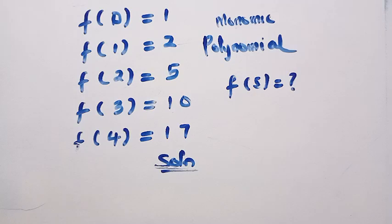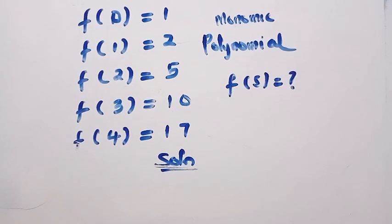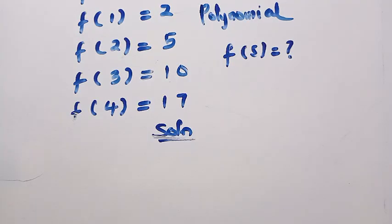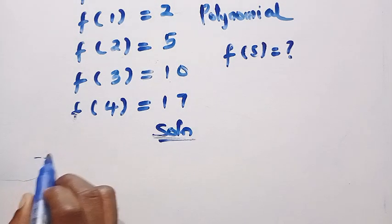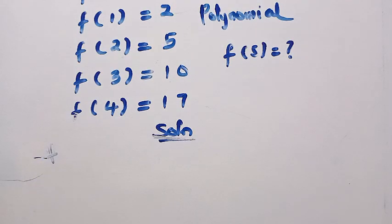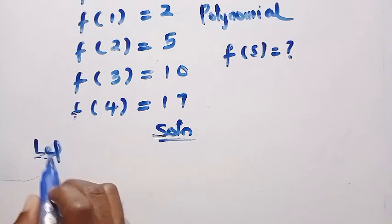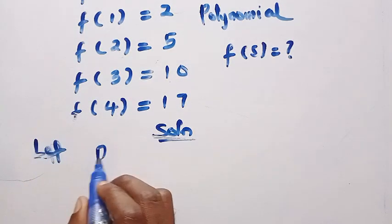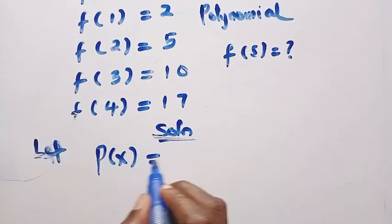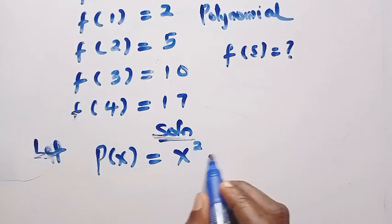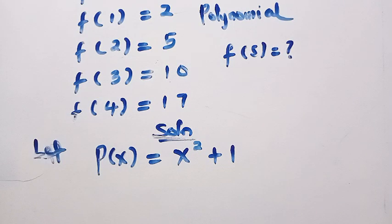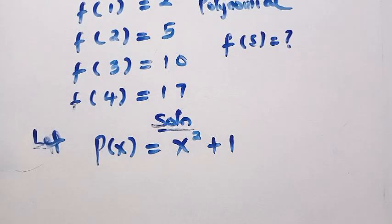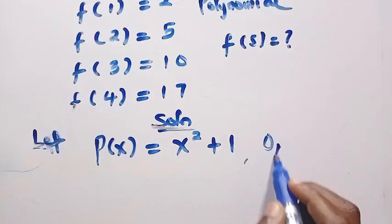In this second method, I'm going to be using some remainder theorems. We have this pattern. Let's try and derive a formula for it. Suppose I let p of x to be equal to x squared plus 1. How does this formula relate to this? It's very simple.